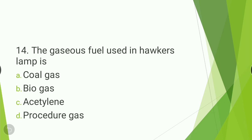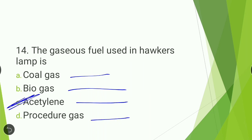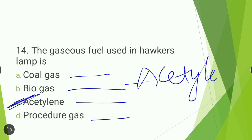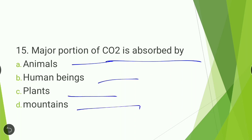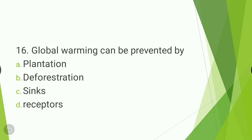Next question: the gaseous fuel used in a hawker's lamp is — coal gas, biogas, acetylene, or producer gas? The answer is acetylene. Next question: major portion of CO2 is absorbed by — animals, human beings, plants, or mountains? The answer is plants. Plants absorb the major portion of CO2.